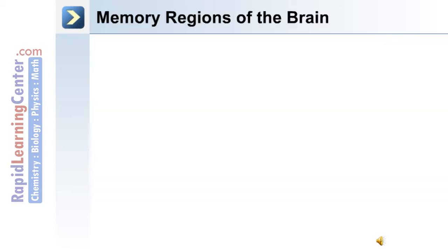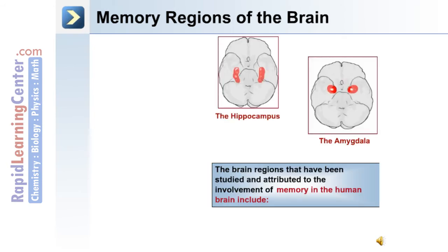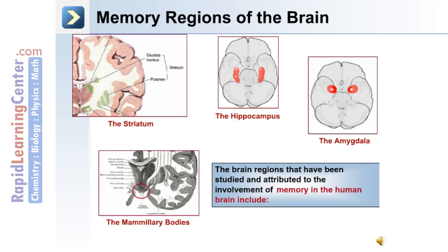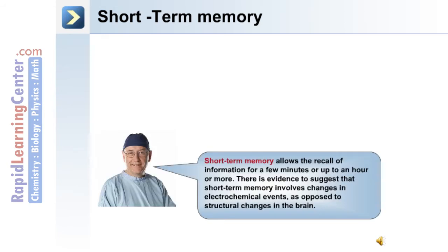Many of our normal everyday functions are based on memories stored within the brain. Memory regions of the brain include the amygdala, the hippocampus, the striatum, and the mammillary bodies. There are two main types of memories: short-term memory and long-term memory.